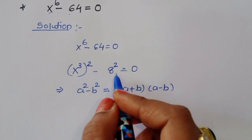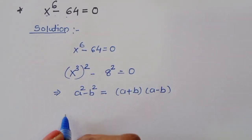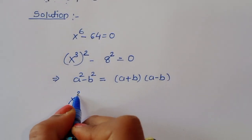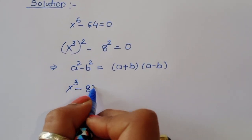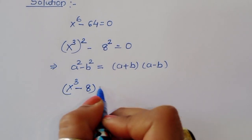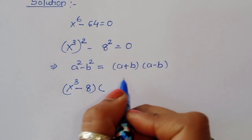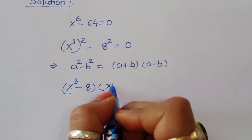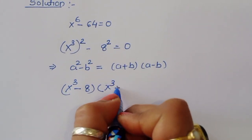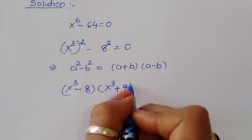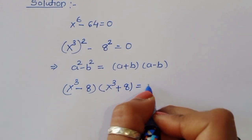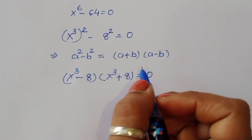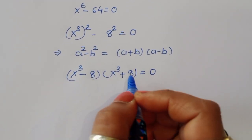Using this formula, we get x cubed minus 8 times x cubed plus 8 is equal to 0. So x cubed minus 8 equals 0 and x cubed plus 8 equals 0. Now we have two equations.